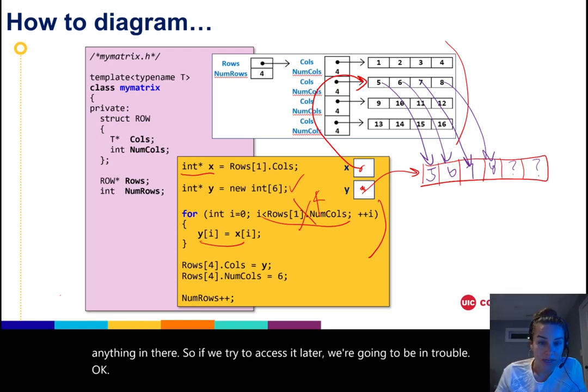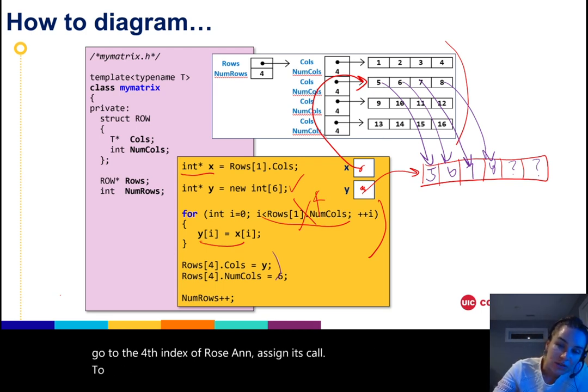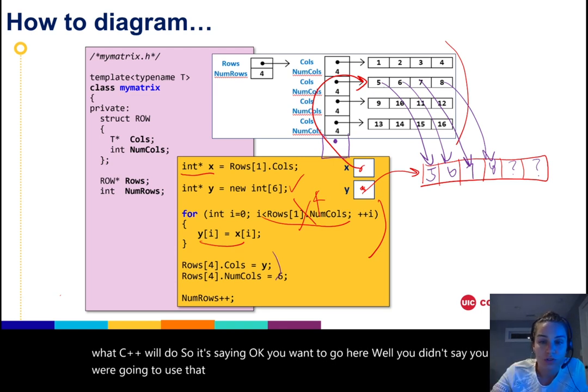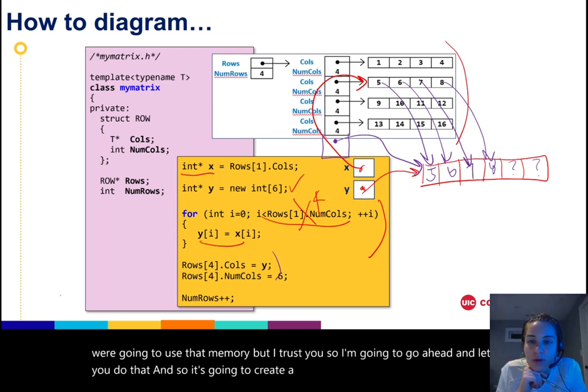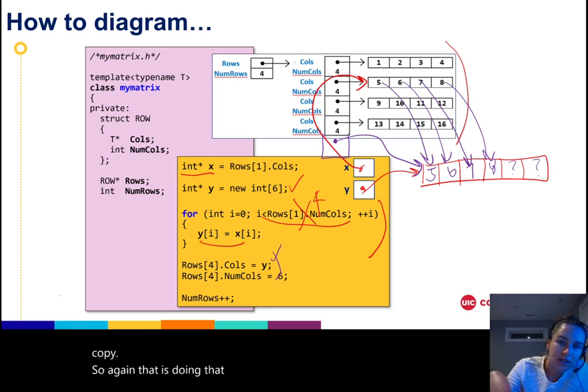Okay, now what's happening in this next line of code? Well, this next line of code says go to the fourth index of rows and assign its cols pointer to y. So we're going to just do that because that's what it says to do, and this is what C++ will do. It's saying, okay, you want to go here? Well, you didn't say you were going to use that memory, but I trust you, so I'm going to go ahead and let you do that. So it's going to create a pointer there and point that pointer to the y array. That's what it says to do, right? And it just blindly does that copy.